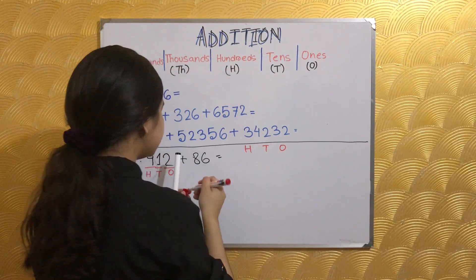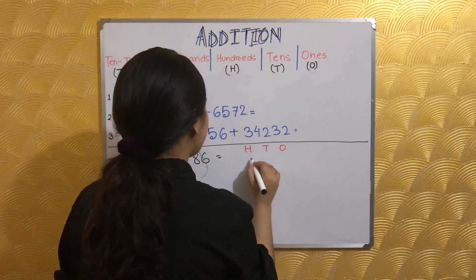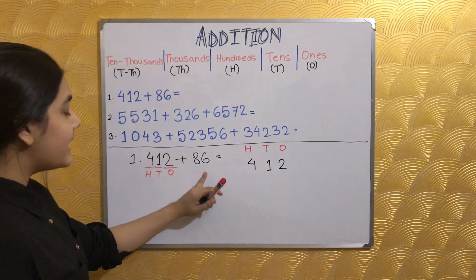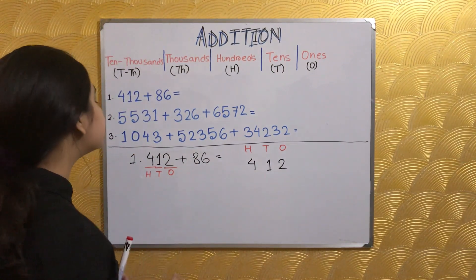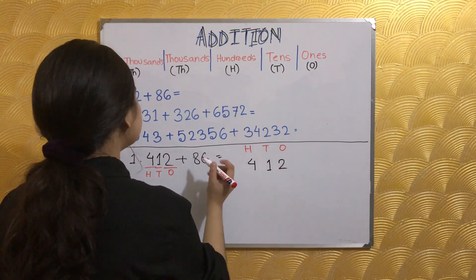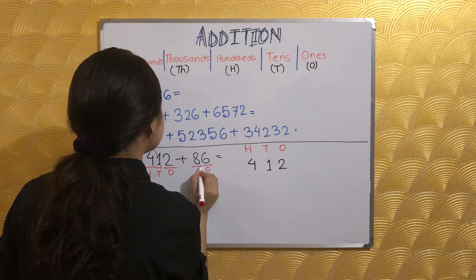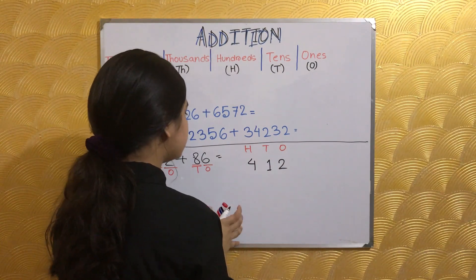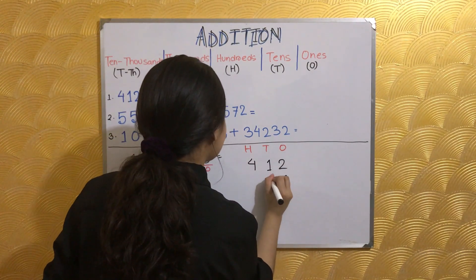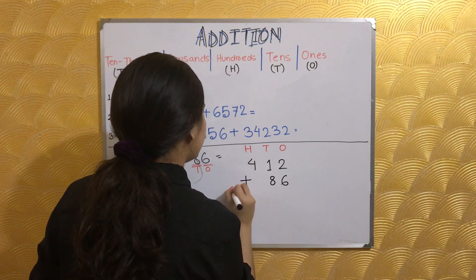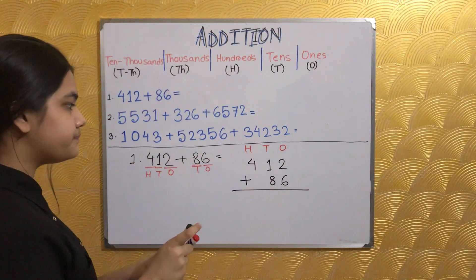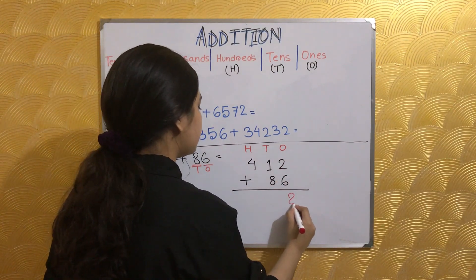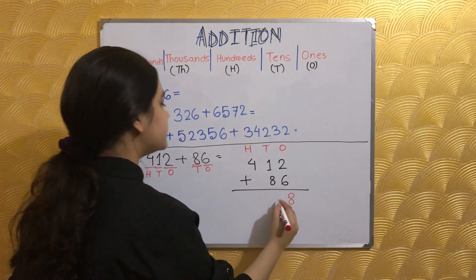We are going to solve it according to their place value. For 86, six is in the ones place and eight is in the tens place. So let's write them according to place value: six and eight. Then add them up: 6 plus 2 is 8, 8 plus 1 is 9.